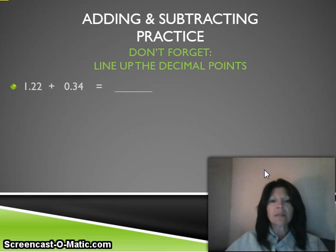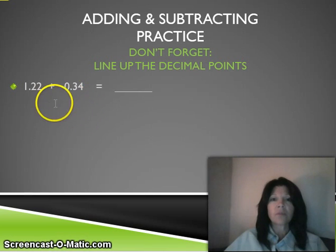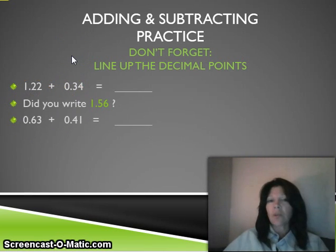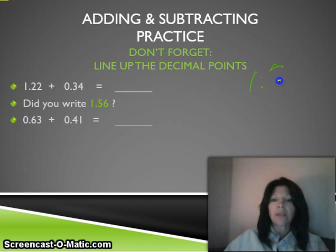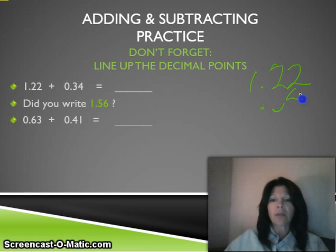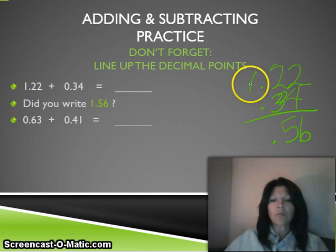Alright, adding and subtracting practice. Your first problem: one and twenty-two hundredths plus thirty-four hundredths. Write that down in your journal, write your answer down, then continue the video. Did you get one and fifty-six hundredths? Line up your decimal points first — two plus four is six, two plus three is five. Don't forget to bring down your decimal point, and one plus nothing is one. You should have gotten one and fifty-six hundredths.